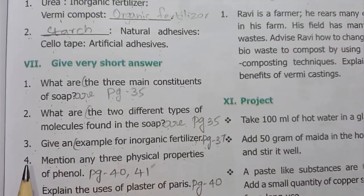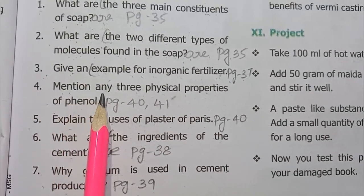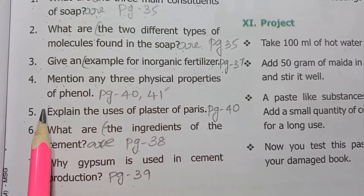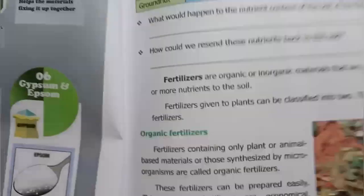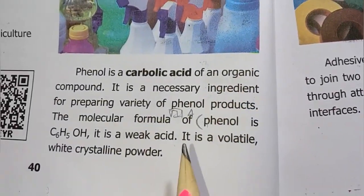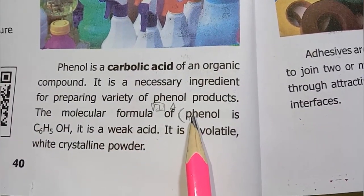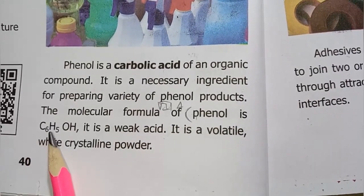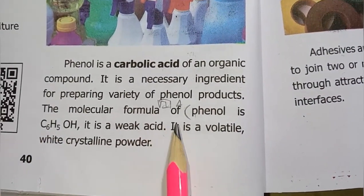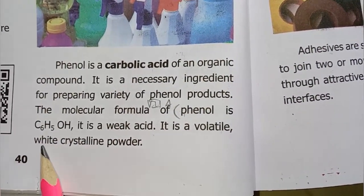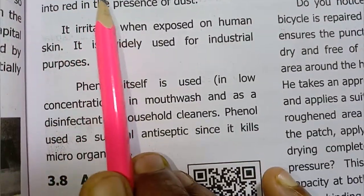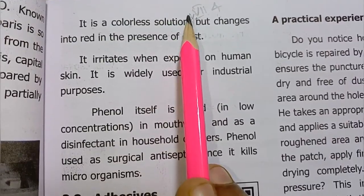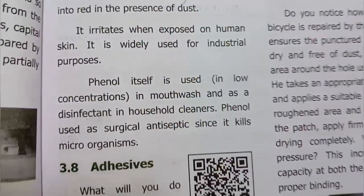Fourth one: mention any three physical properties of phenol. (Page number 40-41) Phenol is C₆H₅OH. Properties: it is a weak acid; it is volatile white crystalline powder; it is a colorless solution.